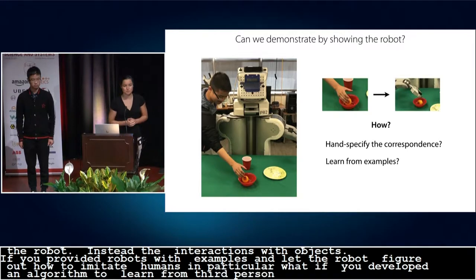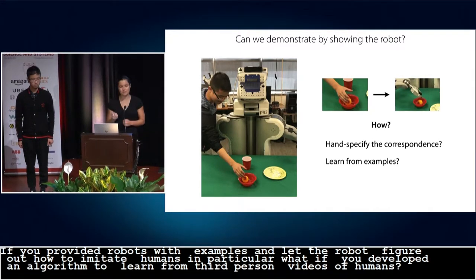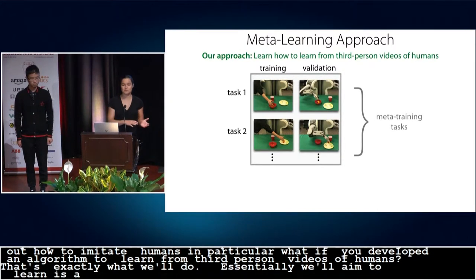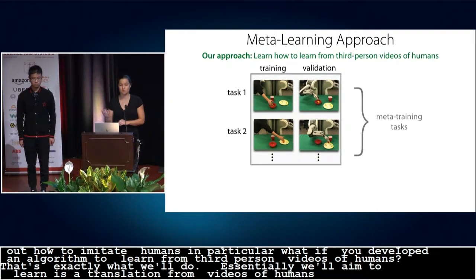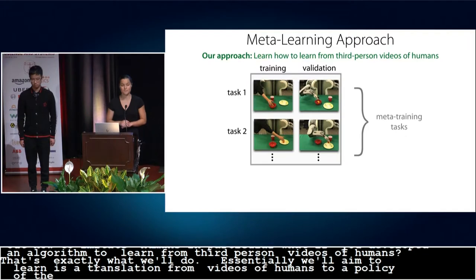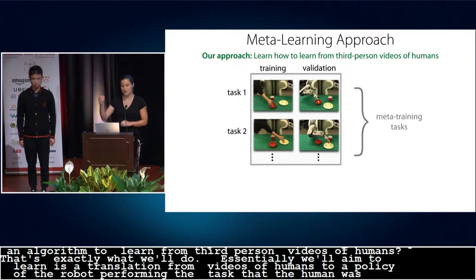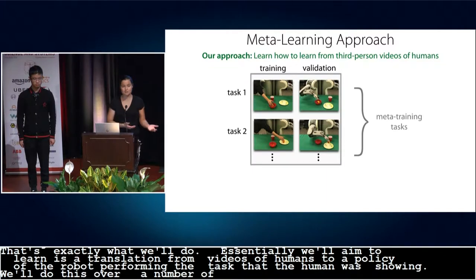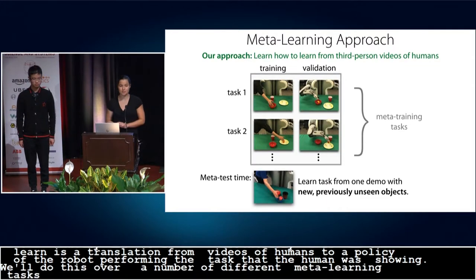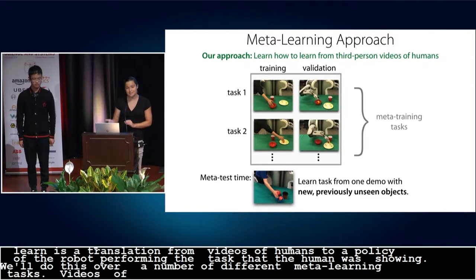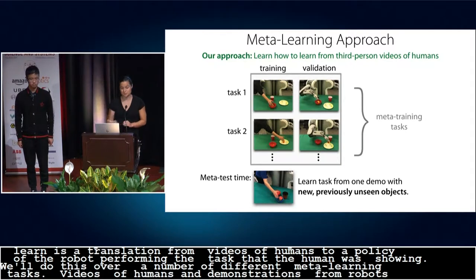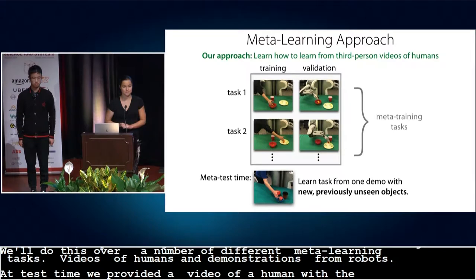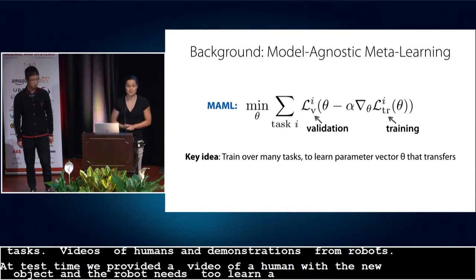What if we instead provided robots with examples and let the robot figure out for itself how to imitate humans? In particular, what if we developed an algorithm that could enable robots to learn how to learn from third-person videos of humans? That's exactly what we'll do. Essentially, what we'll aim to learn is a translation from videos of humans to a policy of the robot performing the task that the human was showing. And we'll do this over a number of different meta-training tasks, collecting data of videos of humans and demonstrations from robots. Then at test time, we provide a video of a human doing a task with a new object, and the robot needs to learn a policy for that task. Next, Kevin will talk about the details of our approach.